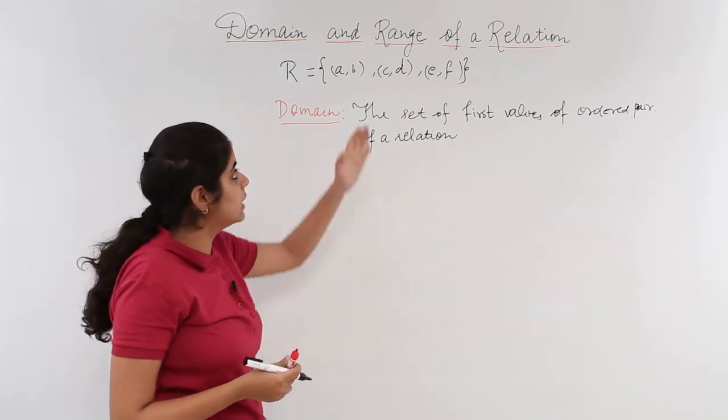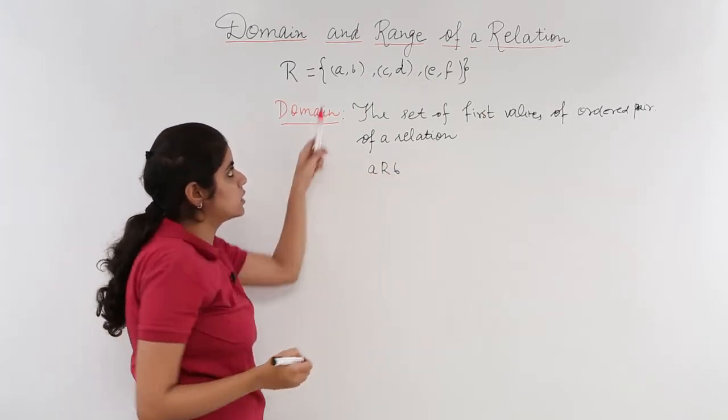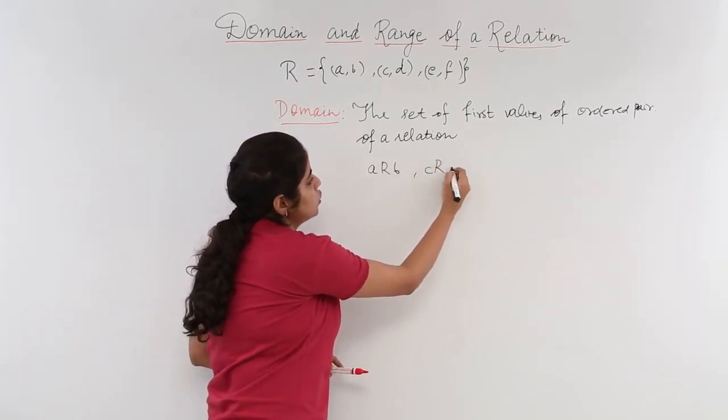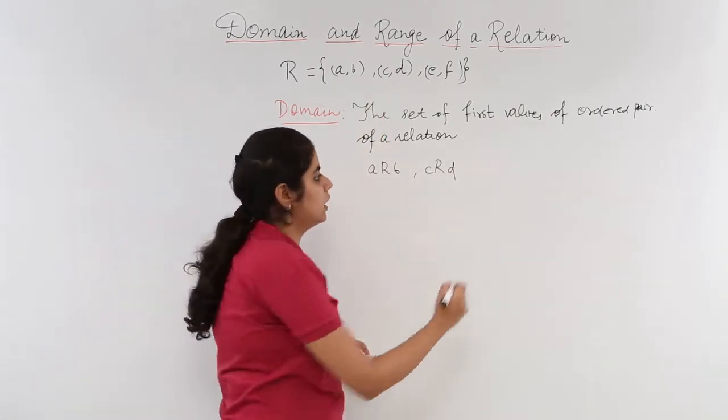Now in this relation wherein I have a related to b as you can see upwards, c related to d as you can see here and e related to f.